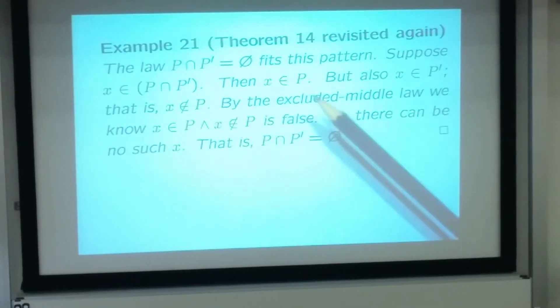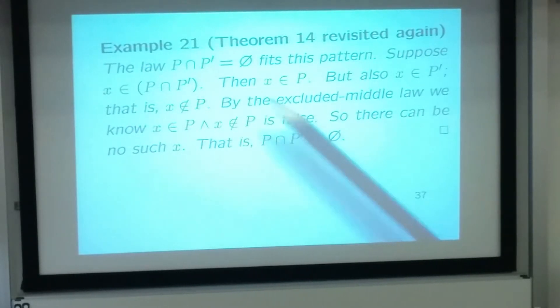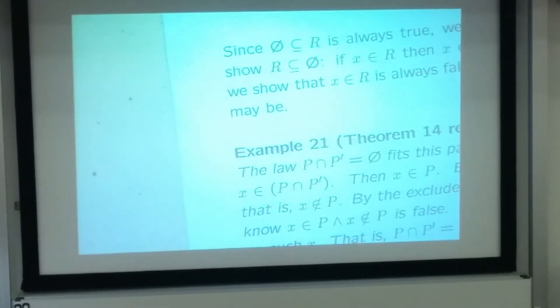By the logical excluded middle law, we can't have something being both true and false at once. We know that x belongs to P and x does not belong to P is indeed always false. And that was the membership test for P intersection P prime, so we conclude that P intersection P prime doesn't have any elements that satisfy this membership test and will always be false. So this set will be empty, which is what we wanted to show.